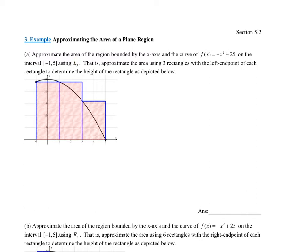That's what L3 means: the L stands for left endpoint, and the 3 means the number of rectangles. So it says approximate the area using three rectangles, and the L stands for the left endpoint of each rectangle to determine the height.